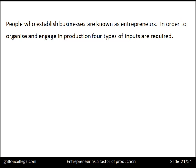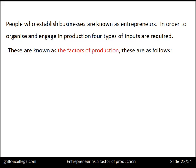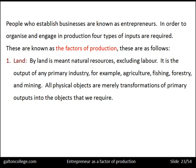People who establish businesses are known as entrepreneurs. In order to organize and engage in production, four types of input are required — the factors of production. The first is land. By land we mean natural resources — not necessarily land as we look out and see. We mean anything excluding labour: the output from any primary industry such as agriculture, fishing, forestry, and mining. All of those are classified as land. It's an easy way of combining these natural resources under one term.